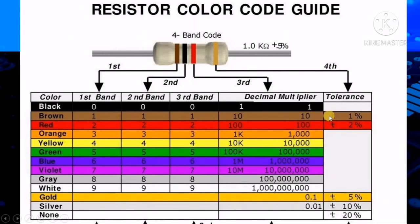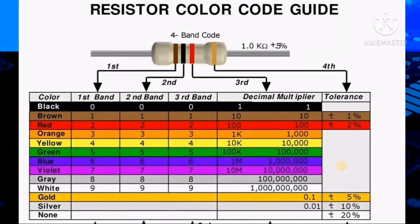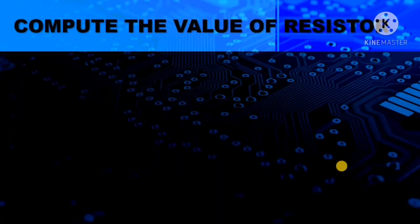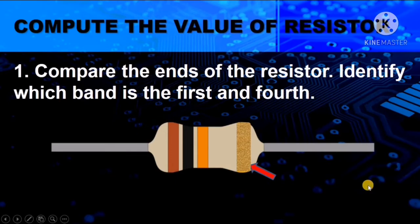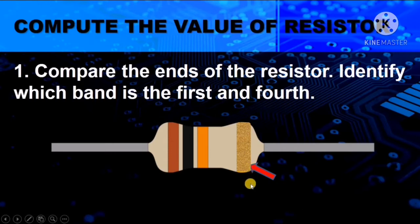I hope you have memorized and mastered the color coding chart. So, let's go directly to computing the resistance value. Here's the step. The first one: compare the ends of the resistor. Identify which band is the first and fourth.